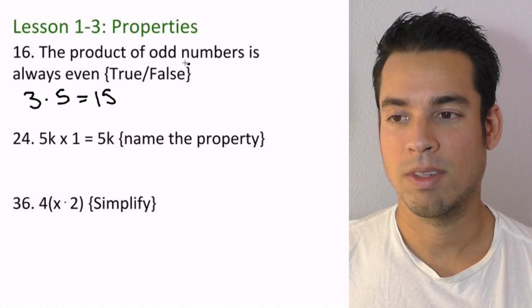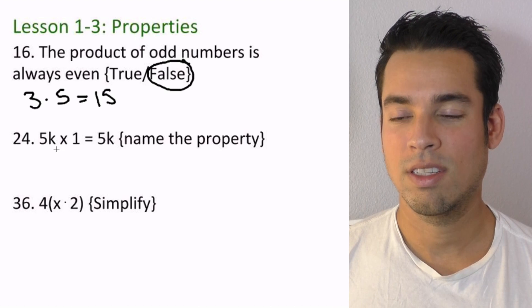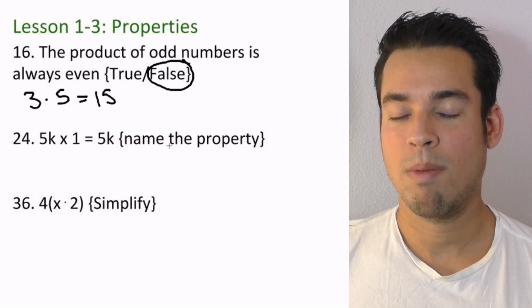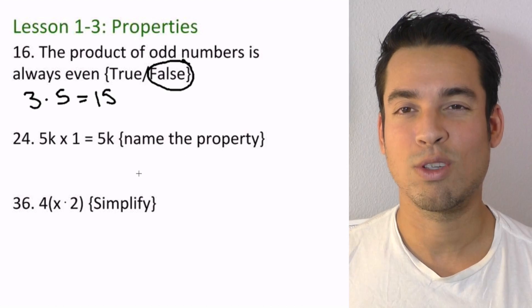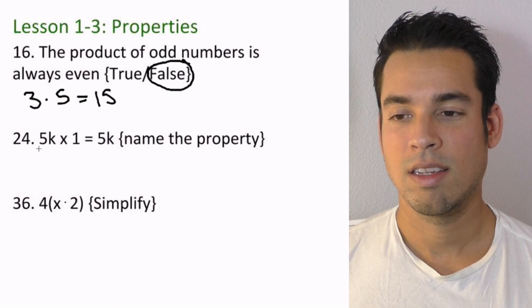Now let's go to this guy. Now we're saying name the property, right? We're talking about commutative, we're talking about associative property. Here what we're looking at is we're having 5, some entity—it doesn't matter—there's 5k times 1 and then equaling itself.